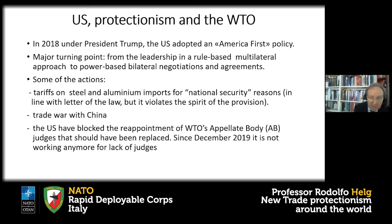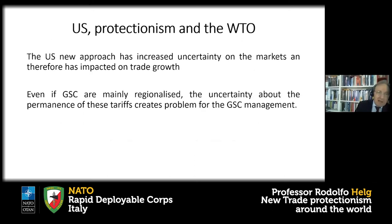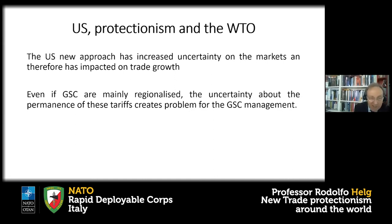The United States had motivations — the Appellate Body was not working well — but is blocking it the right way to solve that problem? The problem with this US approach is that it increases uncertainty around the world, and businesses don't like uncertainty. In terms of foreign direct investment and trade, if there is huge uncertainty, companies stop trading and stop making foreign direct investments.